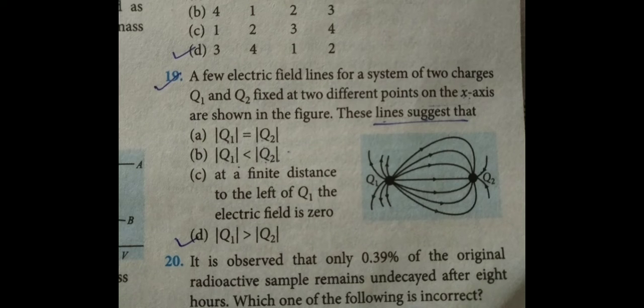This problem is basically electric field lines and electrostatics. A few electric field lines for a system of two charges, Q1 and Q2, fixed at two different points on the x-axis are shown in the figure. And these lines suggest that.